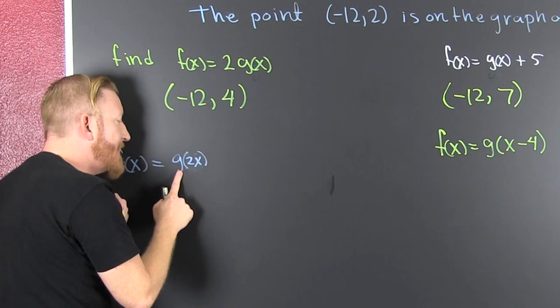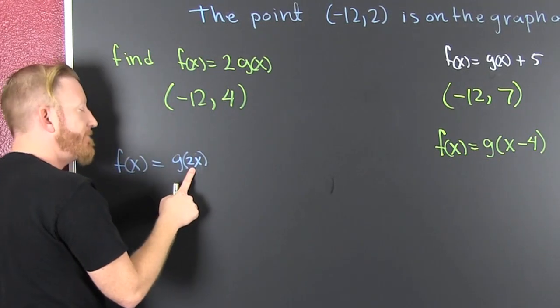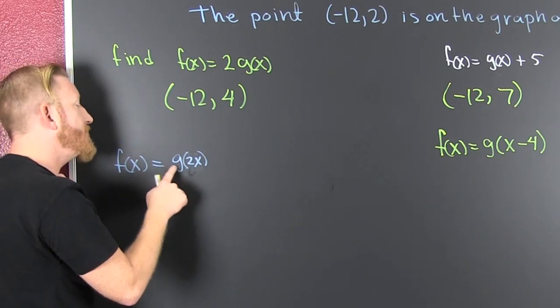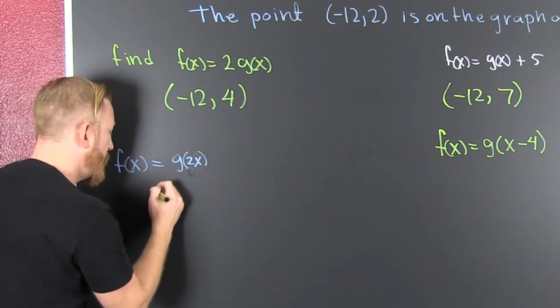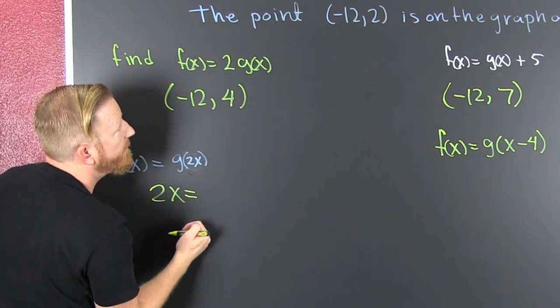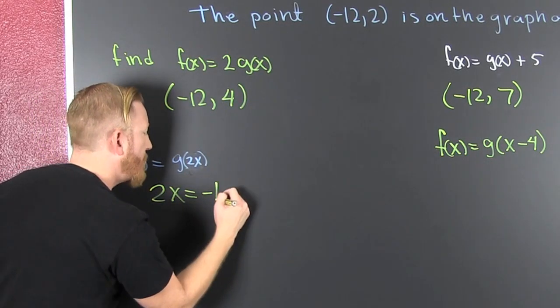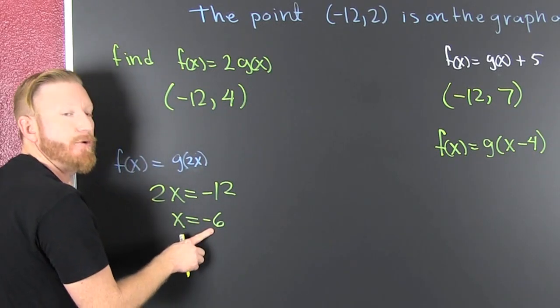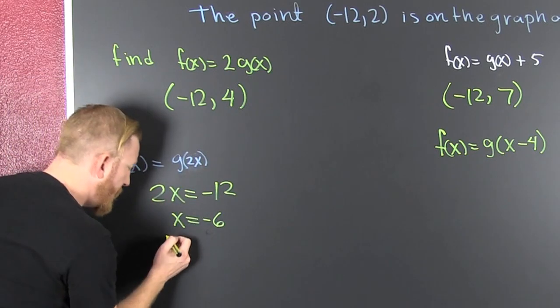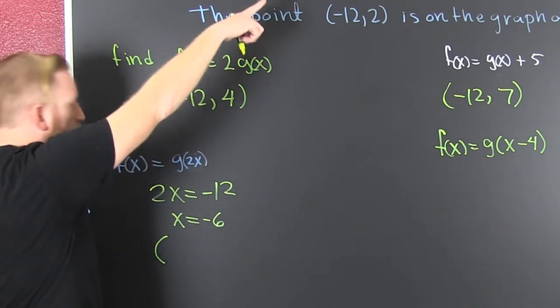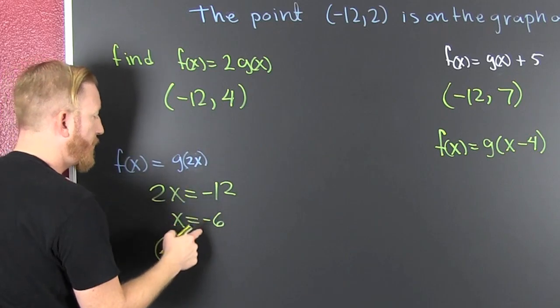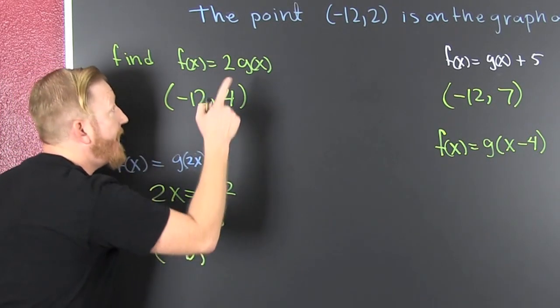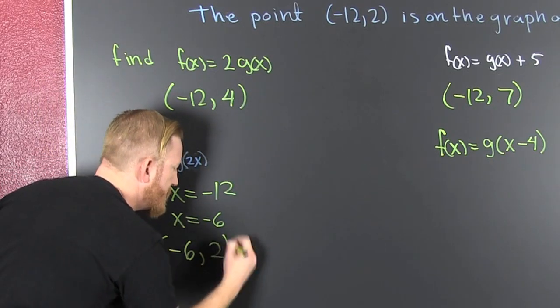But now we're inside that guy. Now we need to look at the point. Here, g of 2x. 2x is equal to whatever that x value was, minus 12. So my new x is minus 6. And that's how we get a shrink out of this. If I take that x value and I take half of it, my new x value is -6 and I have the regular y.